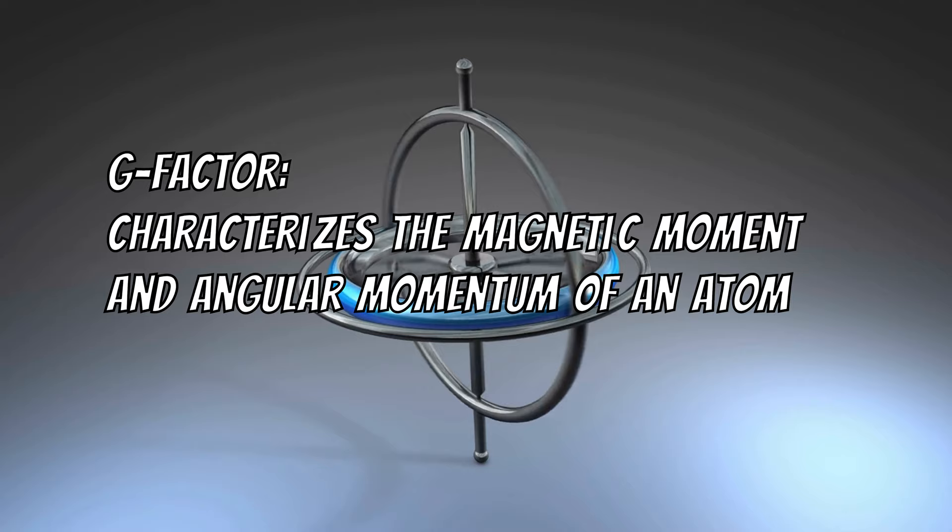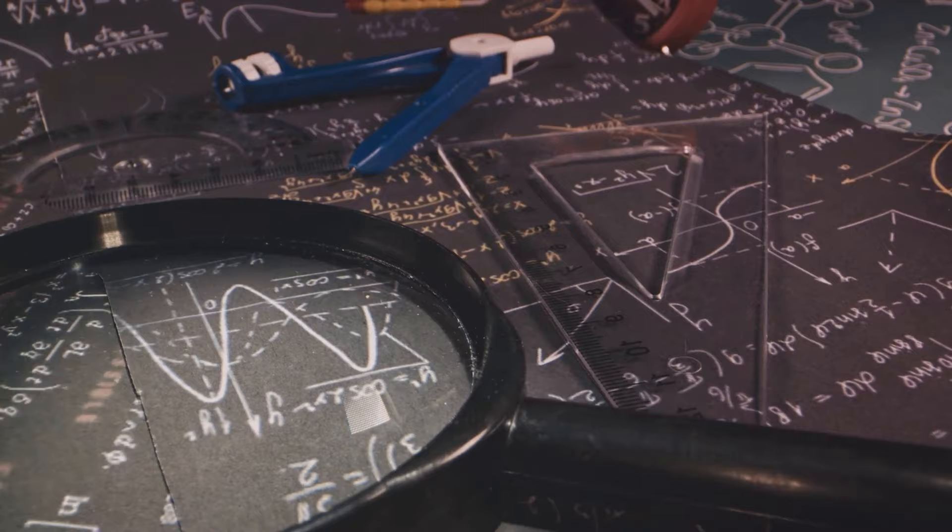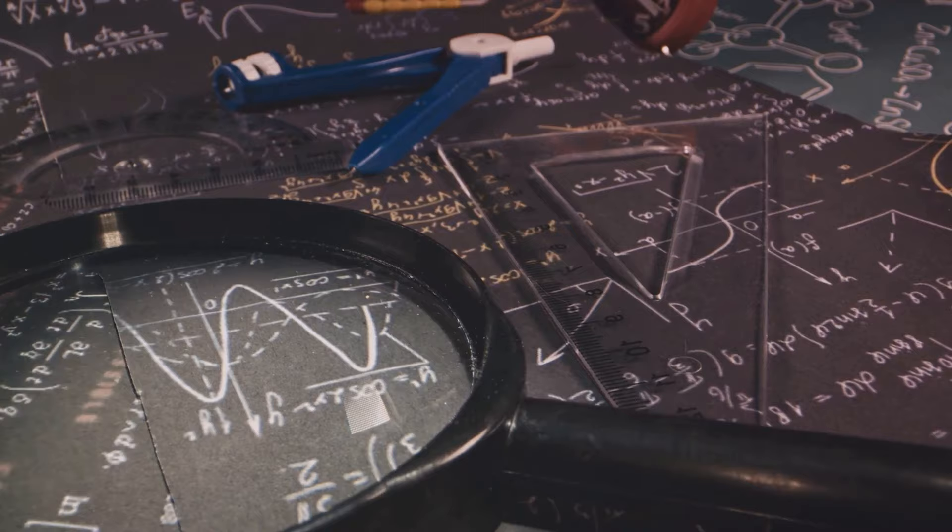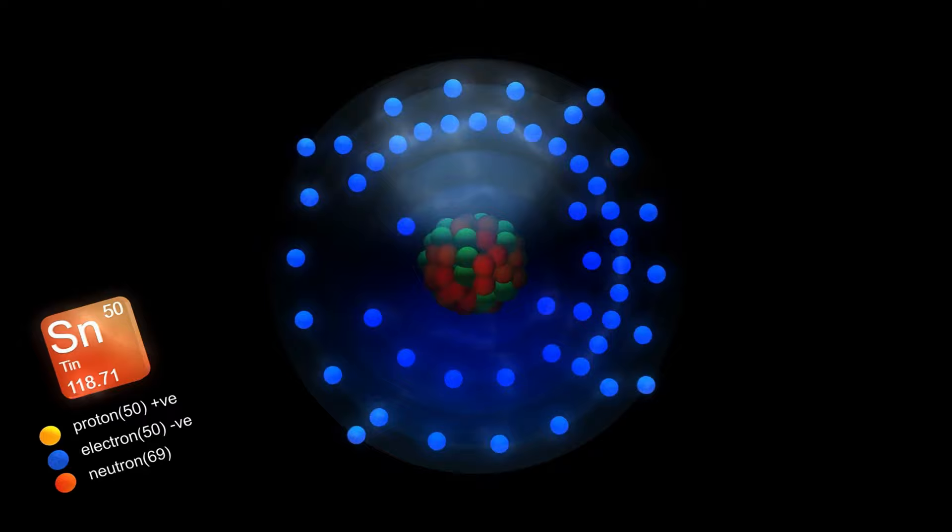Now the g-factor might sound like a strange scientific term, but in essence, it's a value that relates the magnetic moment of a particle to its angular momentum. And in this case, it was the g-factor of the electron in hydrogen-like tin that was under the microscope. But, as you can imagine, achieving high precision in such experiments is no small feat.